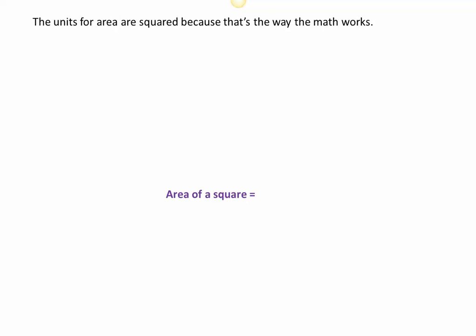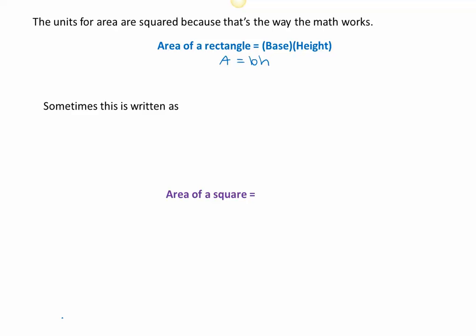The units for area are squared because that's the way the math works. For a rectangle, we might say area equals base times height, written as A = BH. Others say the area of a rectangle is equal to the length multiplied by the width, written as A = LW. Either way it's the same idea — we're taking the two dimensions associated with a rectangle and multiplying them.